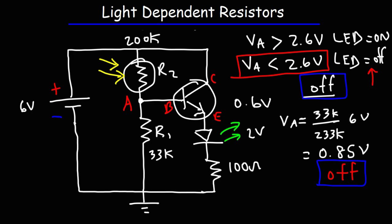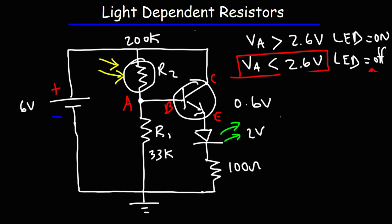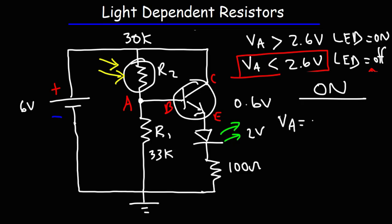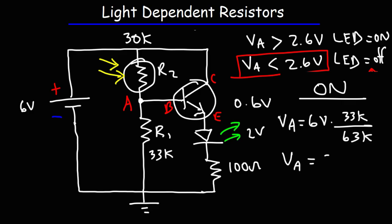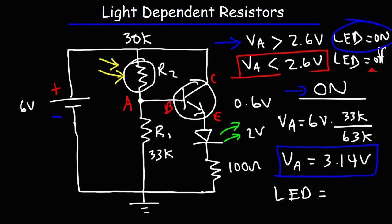Now let's consider the alternative: when the main light is on, the resistance of the LDR decreases to approximately 30K. The new VA equals 6 volts times R1 (33K) divided by the sum of R1 and R2, which is 30 plus 33 = 63K. So 6 times 33 divided by 63 gives a voltage of 3.14 volts. VA is greater than 2.6 volts, so the green LED will be on — we have a light activated circuit.